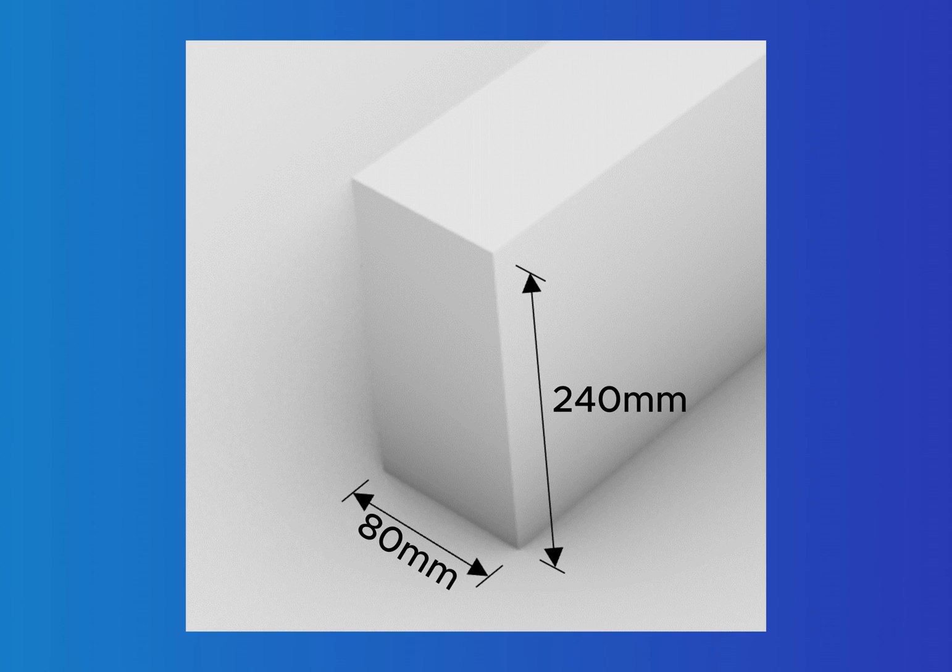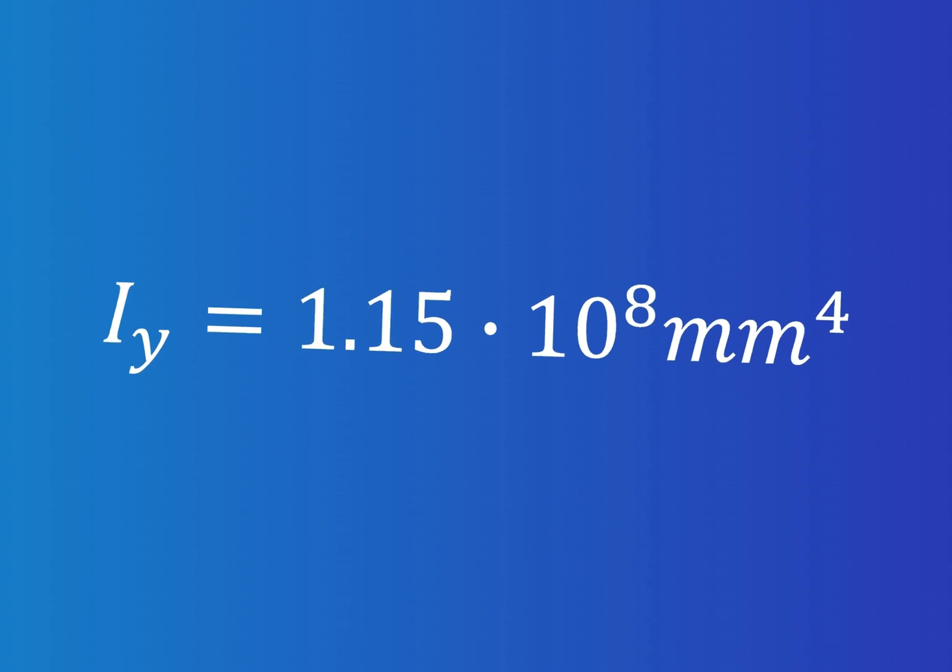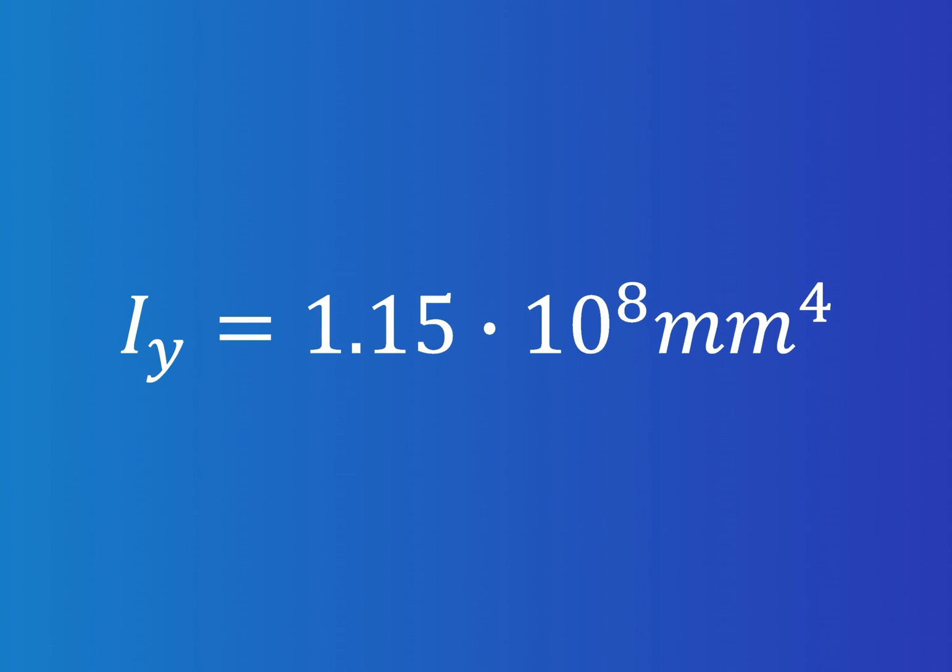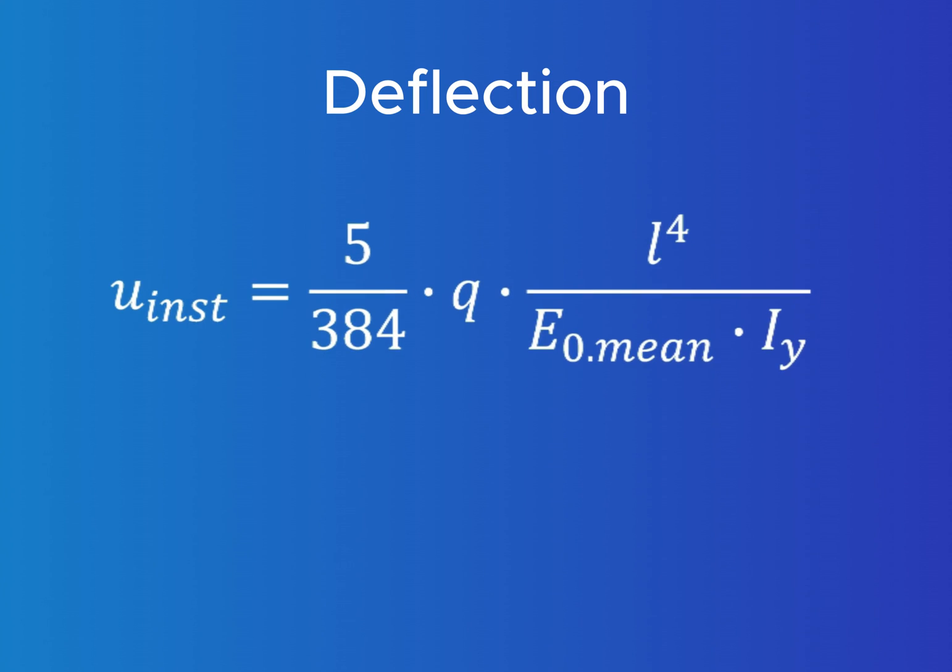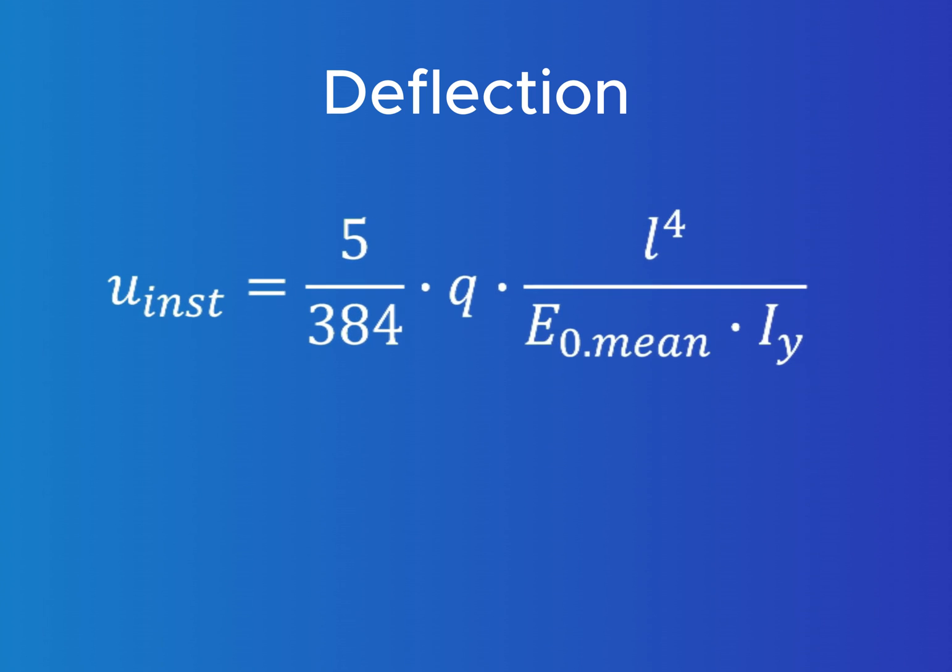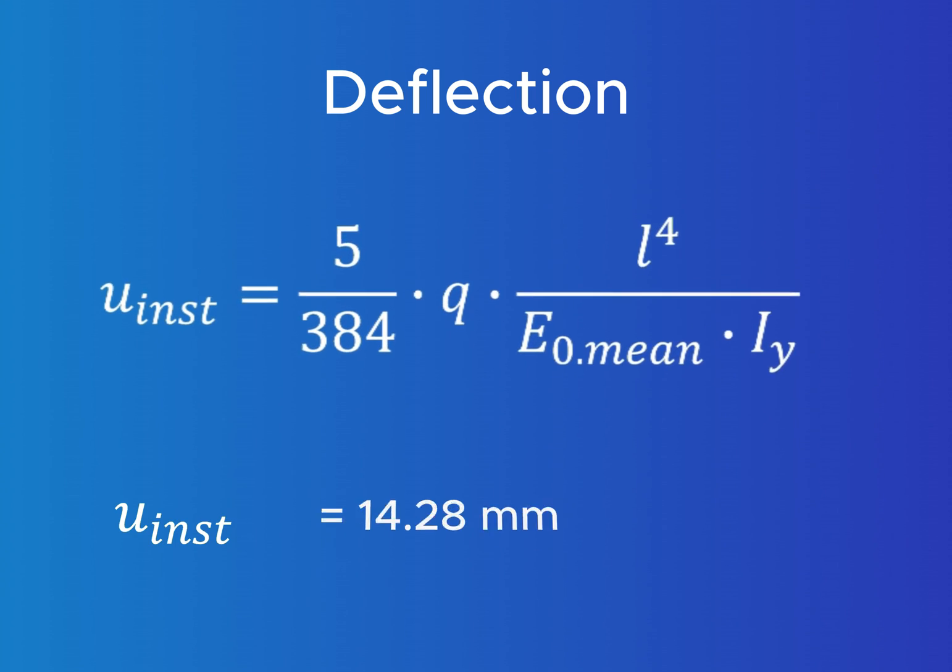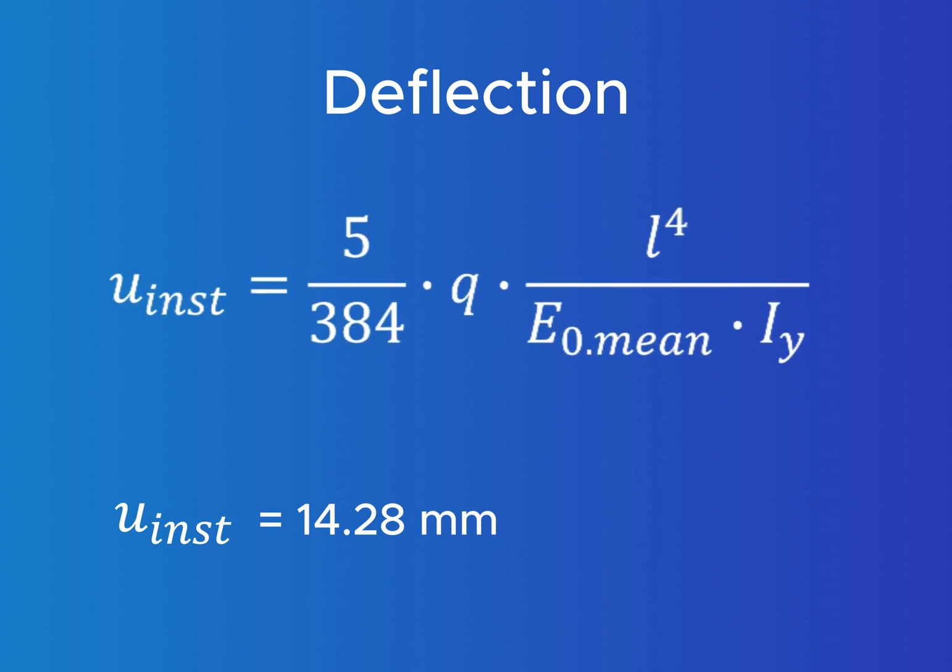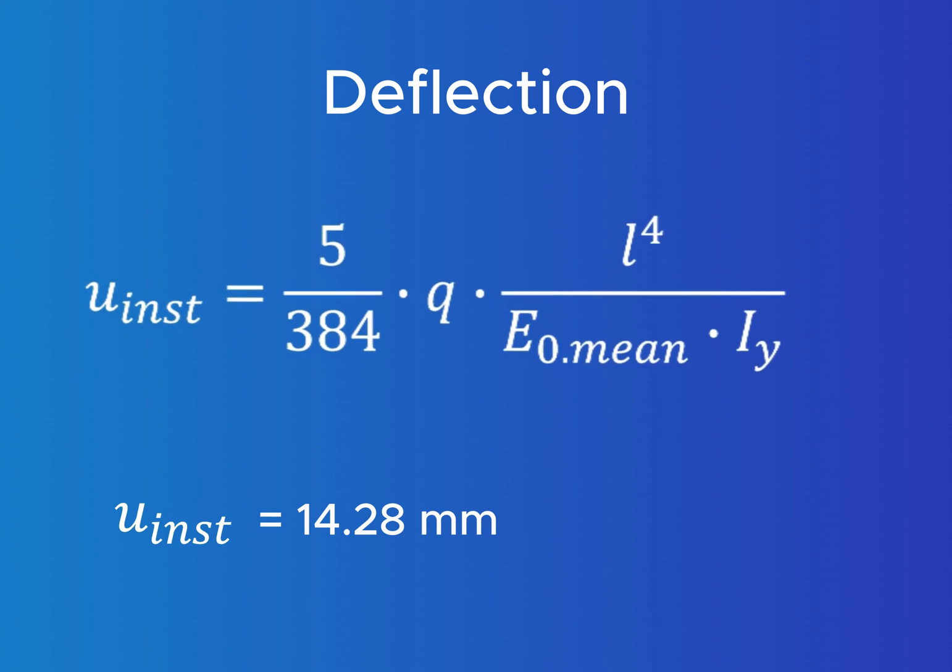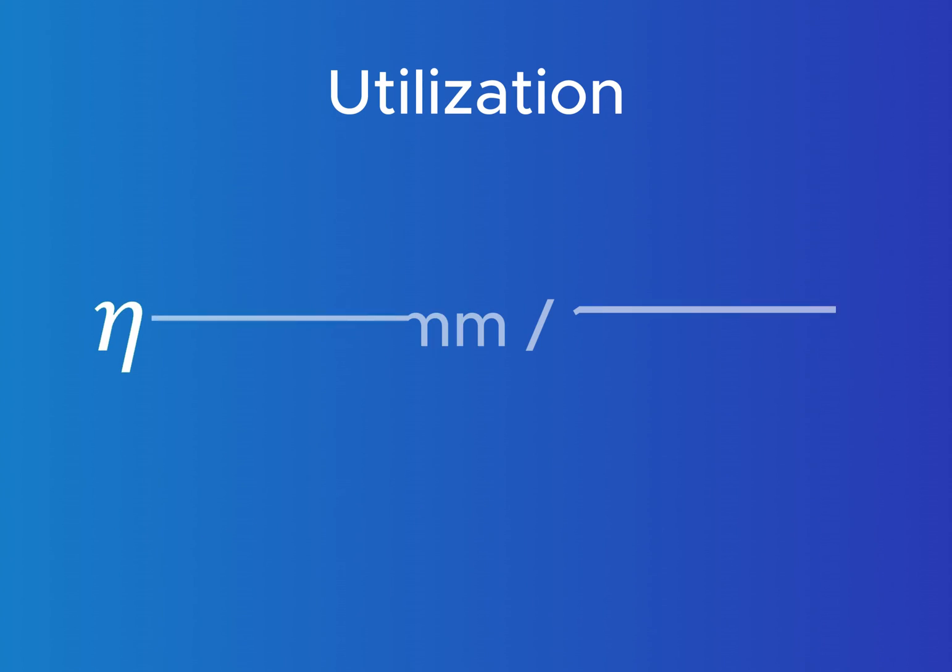So we'll increase the width from 80 millimeters to 100 millimeters and recalculate the moment of inertia as 1.15 times 10 to the power of 8 millimeters to the power of 4. Now we run the deflection calculation again with the updated dimensions and get an instantaneous deflection of 14.28 millimeters and see that also the utilization is less than 1 now.